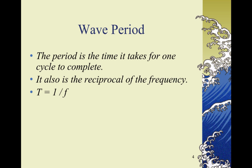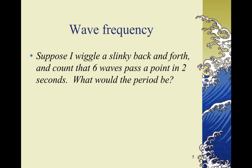Since t is a measure of time, period is measured in seconds. So suppose I wiggle a slinky back and forth and count that six waves pass a point in two seconds. What would the period be? Since the frequency is three Hertz, the period would be one-third of a second, since they're reciprocals.